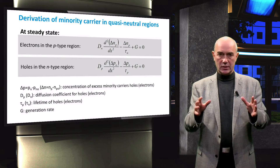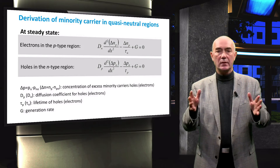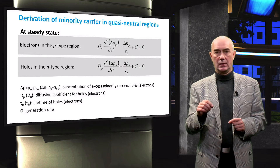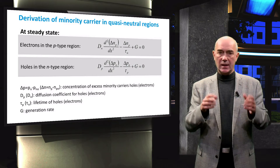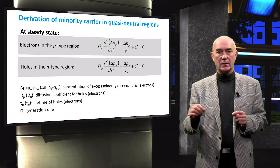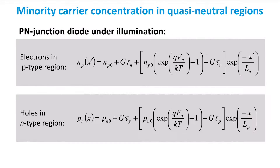To solve these two equations, we need to know the boundary conditions for electrons and holes. With the assumption of Boltzmann approximation, we can use the same boundary conditions as in the analysis of the P-N junction in the dark. Once we solve the continuity equations with boundary conditions, we can find the minority carrier distribution in the quasi-neutral region, arriving at the equation describing the minority carrier distribution.